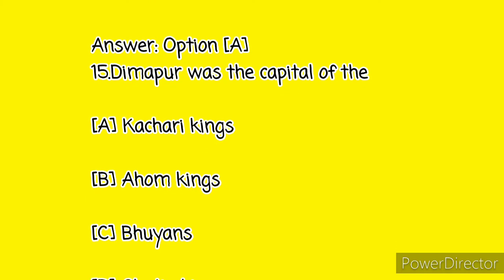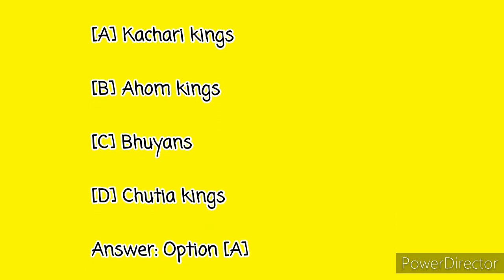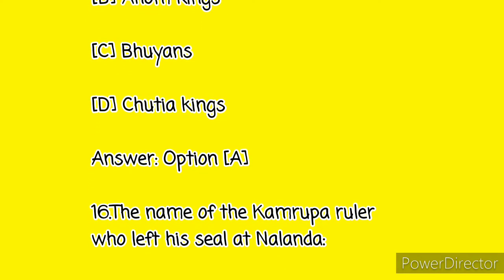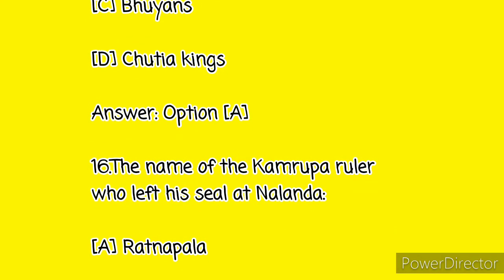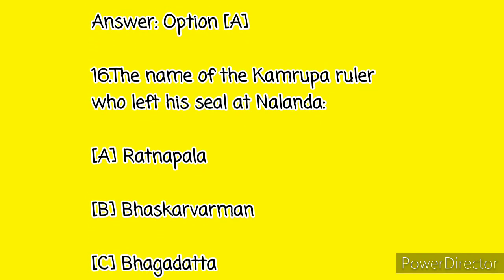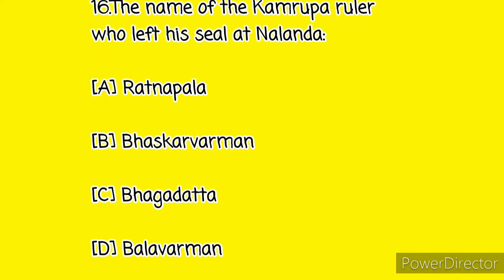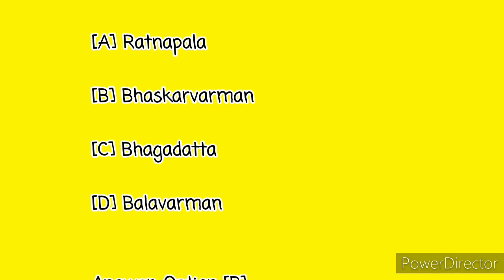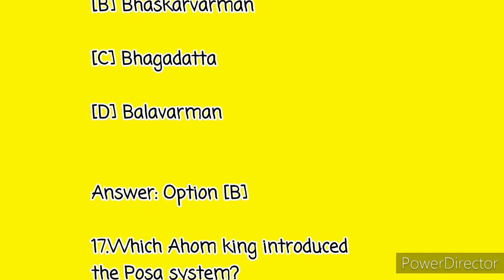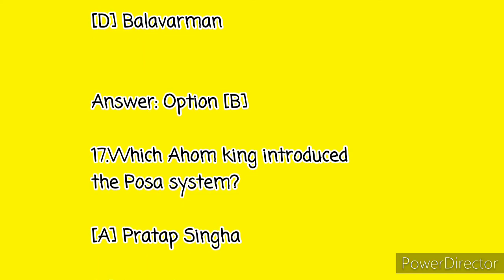Question number fifteen: Dimapur was the capital of Option A: Kachari kings, Option B: Ahom kings, Option C: Bodo, and Option D: Sutia. And here the answer is Option A. Next question, number sixteen: the name of the Kamrupa ruler who left his seal at Nalanda — Option A: Ratnapal, Option B: Bhaskar Burman, Option C: Bhagadatta, and Option D: Bala Burman. And here the answer is Option B.